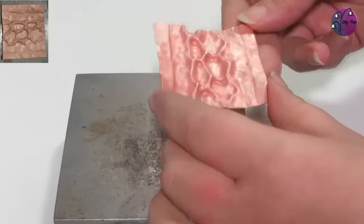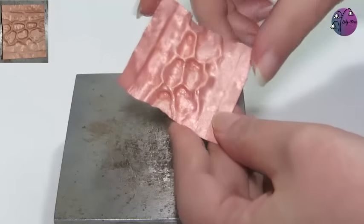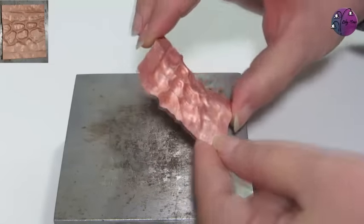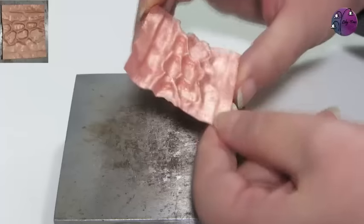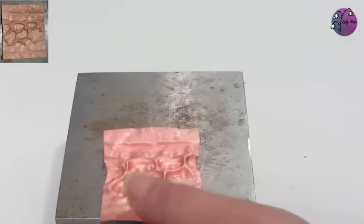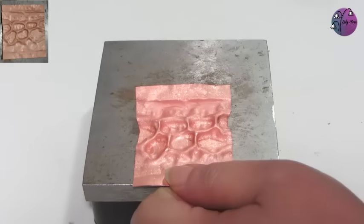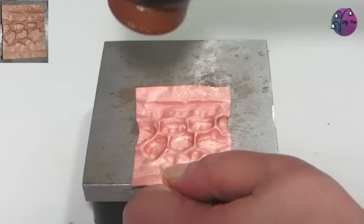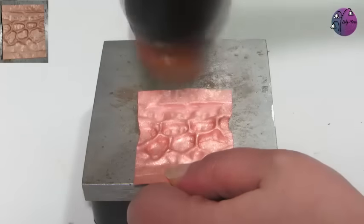So I've annealed the copper and because that's the last time I'll be annealing it, I've cleaned it up in the pickle as well. So I'm now just going to take my rawhide mallet and gently flatten the whole piece out a bit more.